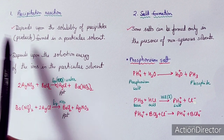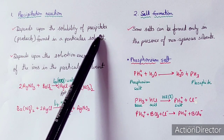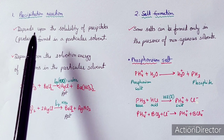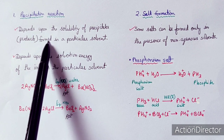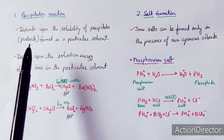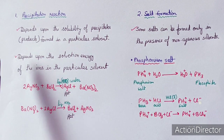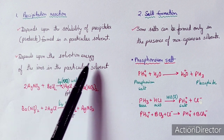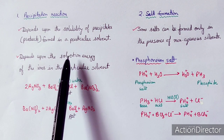The first reaction is the precipitation reaction. This reaction depends upon the solubility of precipitates formed in a particular solvent — specifically, which product is formed and whether it dissolves in that solvent. If the product is dissolved in the solvent system, precipitation will not happen. Precipitation occurs when the product is insoluble, i.e., when solubility is less. This depends on the solvation energy of ions in the particular solvent.